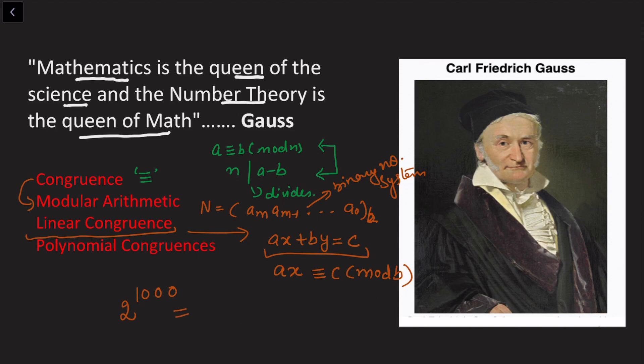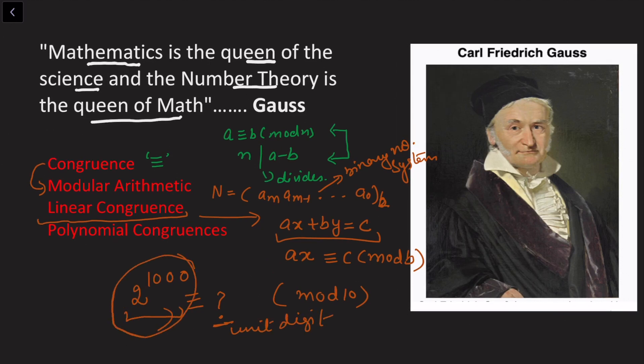Say I want to know, 2 to the power 1000 is congruent to what, or what is the last unit place of this number? I can consider this into modulo 10 and I can consider what is the unit digit of this big number. It allows us to solve large numbers and find what is the remaining residue.